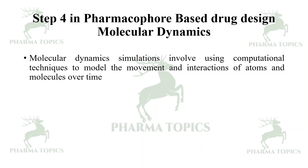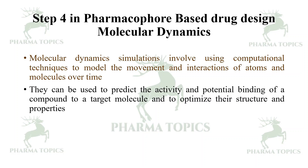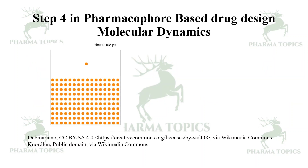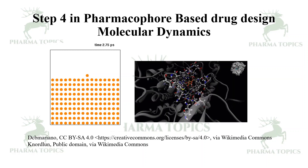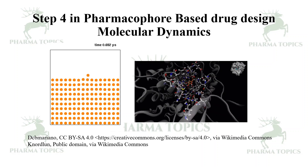Next is molecular dynamics. Molecular dynamic simulations involve using computational techniques to model the movement and interactions of atoms and molecules over time. They can be used to predict the activity and potential binding of a compound to the target molecule and to optimize their structure and properties. When a lead or hit interacts with the target proteins, it causes numerous interactions which are studied with molecular dynamics. It calculates the energy levels of all atom interactions combined.